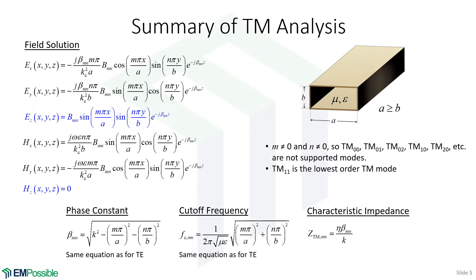For the TM analysis, all field components throughout the wave guide are summarized. Since TM means transverse magnetic, the Z component of the magnetic field is set to zero, reducing the problem to solving a single differential equation for the Z component of the electric field. That solution, shown in blue, is substituted into other equations to get the remaining field components, yielding the phase constant for guided modes with indices M and N. For TM modes, neither M nor N can be zero.